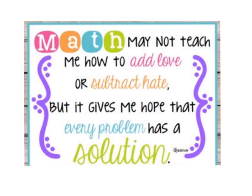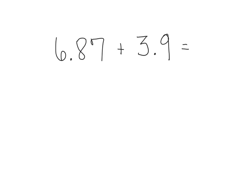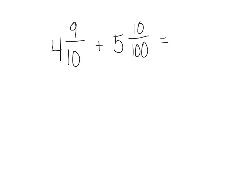Math may not teach me how to add love or subtract hate, but it gives me hope that every problem has a solution. You have 6 and 87 hundredths plus 3 and 9 tenths. You may solve this the way you would like — by converting them into fractions and then back to decimals, or just by adding — but make sure you're lining up your decimals or you'll get the answers wrong. Next: 4 and 9 tenths plus 5 and 10 hundredths — you're going to have to give me the answer as a decimal. Be careful, you're dealing with two different denominators so you have to rename it.